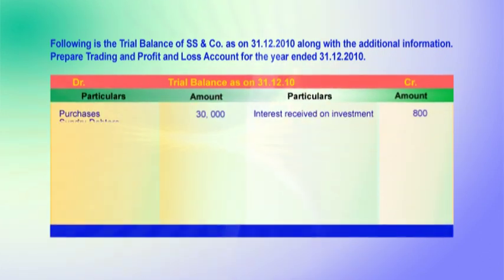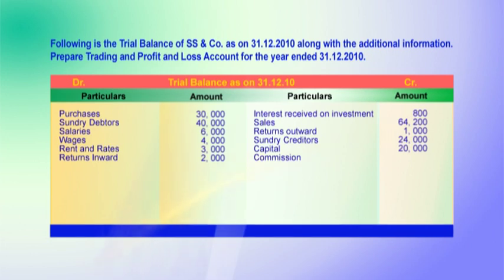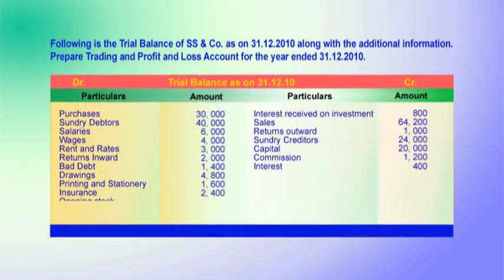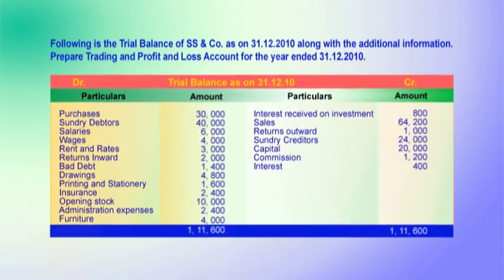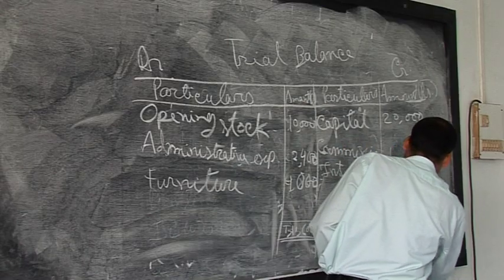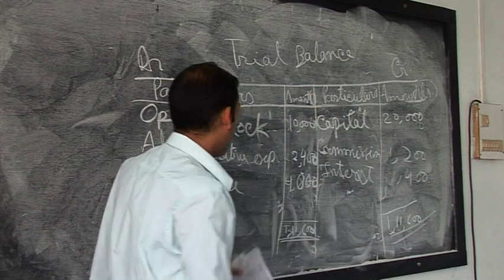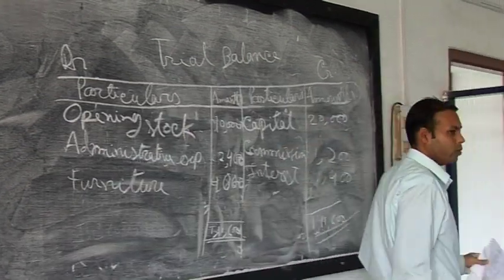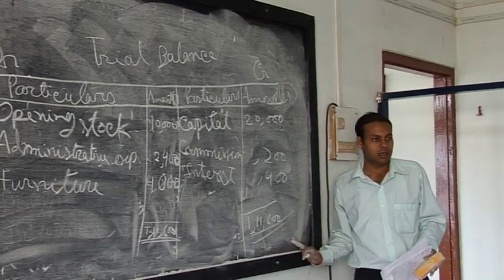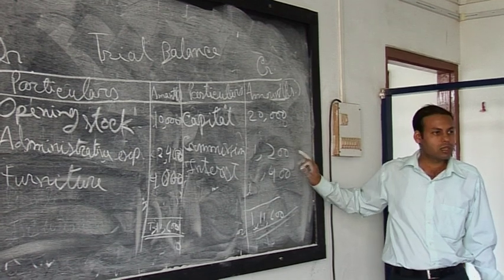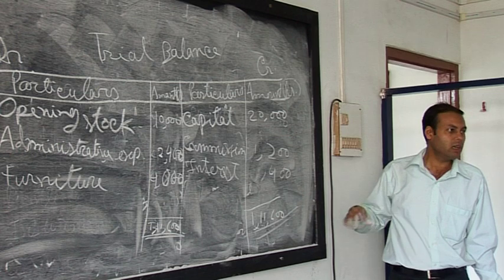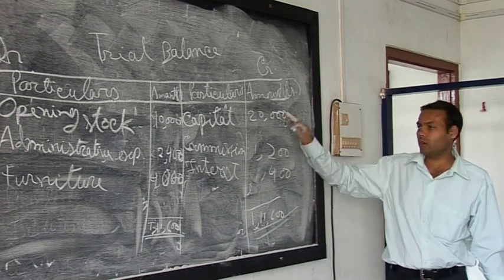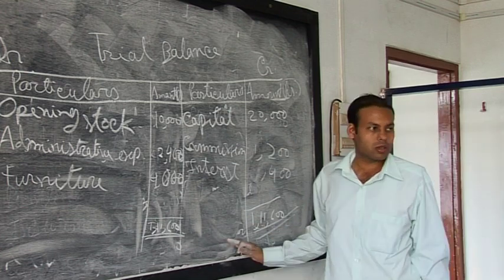We have prepared this trial balance with imaginary figures. The main feature of a trial balance is that the debit amount column and the credit amount column should be equal — both sides must agree. The total of this trial balance is 1,11,600. It means if we total all the debit column amounts and all the credit column amounts, we get 1,11,600, confirming our trial balance agrees and that we are arithmetically correct in recording journals, posting to ledgers, and preparing the trial balance.